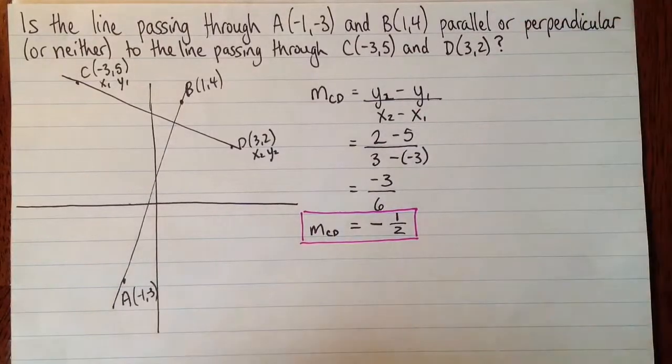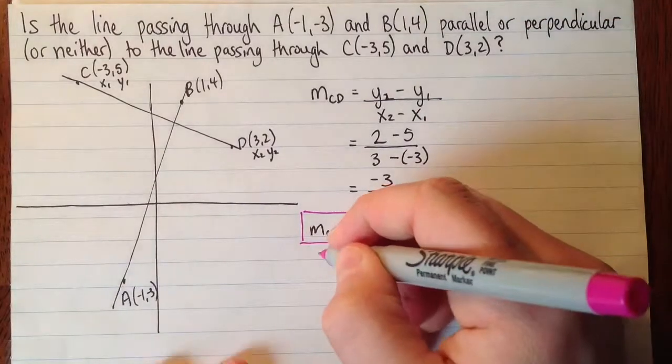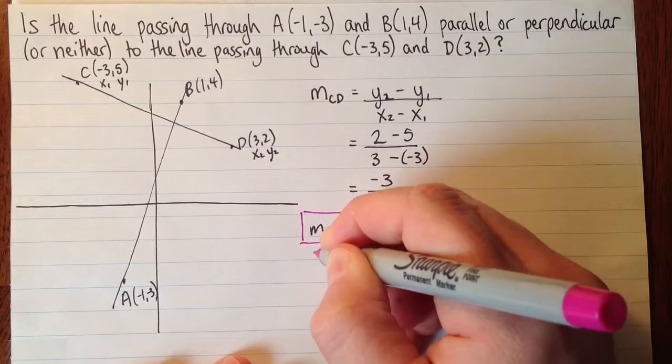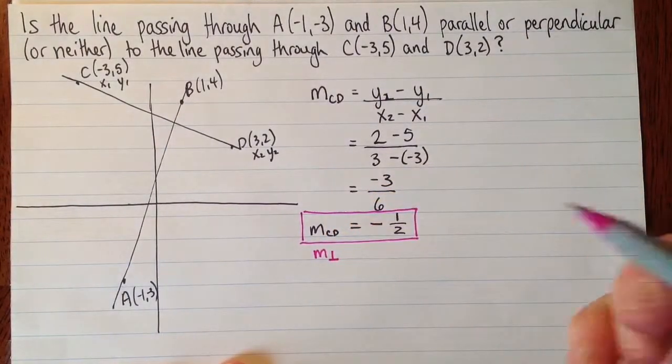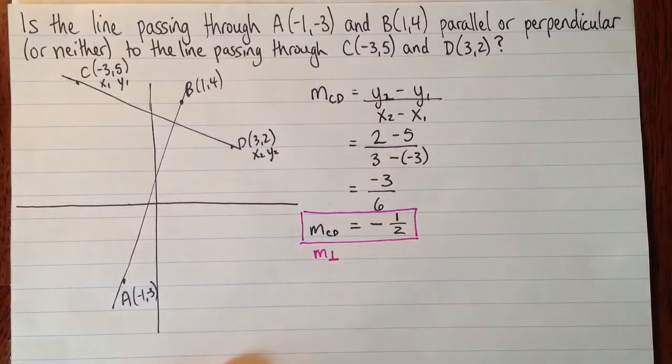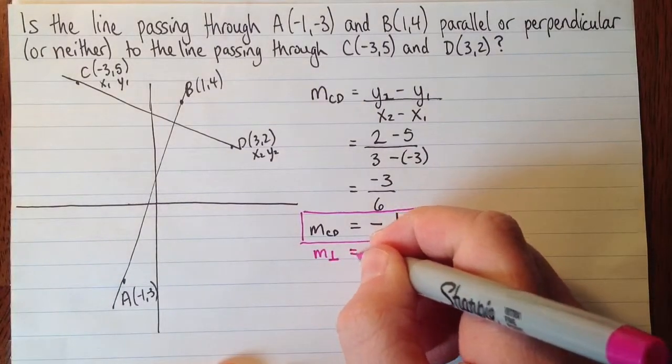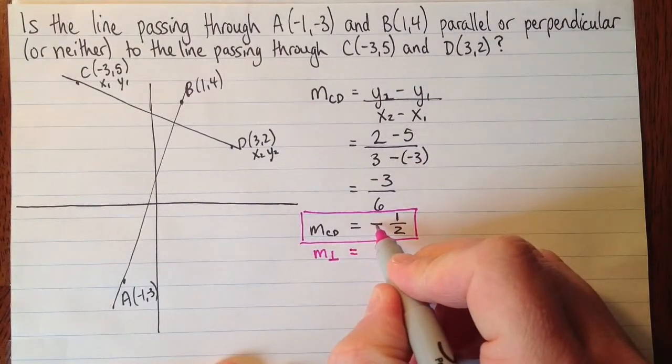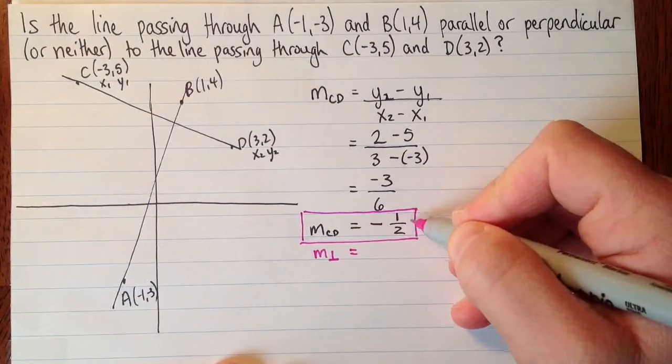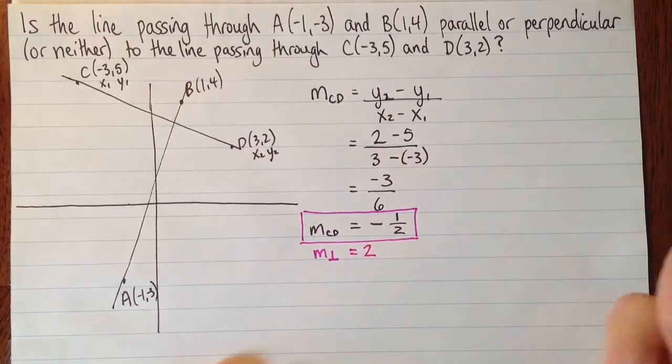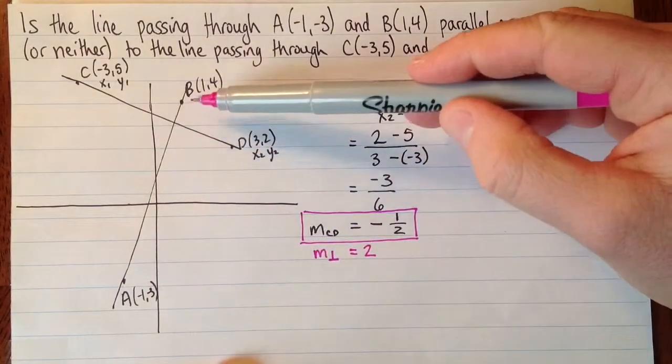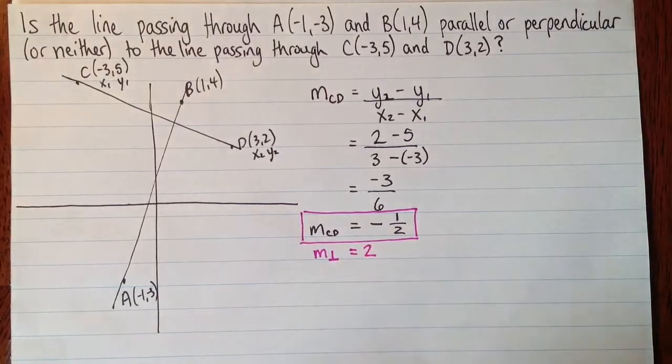Okay, so the perpendicular slope here, we can write that as m perp. This is how we say that. This is a slope and then a perpendicular sign. The perpendicular slope of that would be, so this one's negative, so it would be positive. And we flip the number over to get the negative reciprocal, so it would be 2. So if we come out with AB having a slope of 2, then we know that these are perpendicular. If it's anything else, we know they're not.